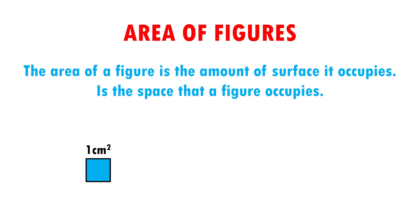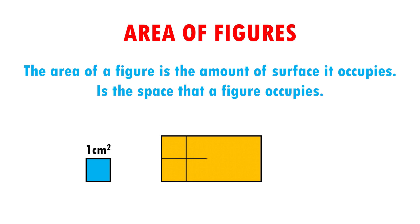As in this example, imagine that I have this rectangle and I am going to see how many 1 cm squares per side will fit. And done! It can fit 8. This means that the area of this rectangle is 8 cm squared.